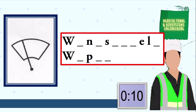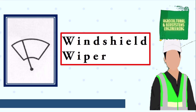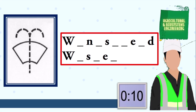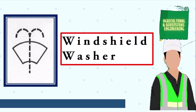Next symbol, your 10 seconds starts now. The answer is windshield wiper. Next symbol, your 10 seconds starts now. The answer is windshield washer. Next symbol, your 10 seconds starts now.